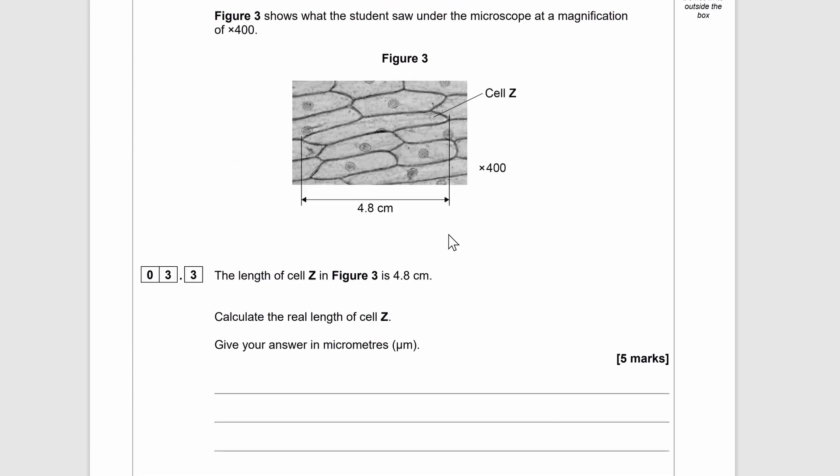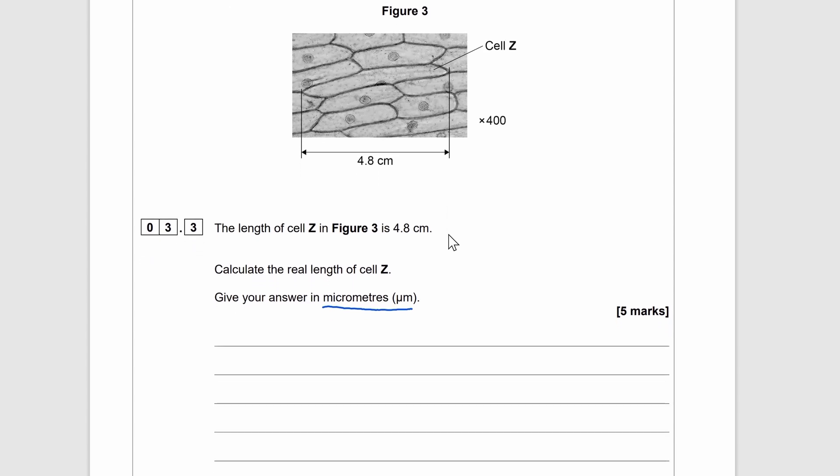Another skill you may be assessed on is utilizing the magnification equation. Remember that it will not be given to you in the exam. You need to be able to recall it. Magnification equals image size or image length over actual size or actual length. They may give you two of the three values and you just need to plug them into the equation. But there may be a situation where they give you a figure and then you would need to measure a length of the figure to find the image length and then use the equation.